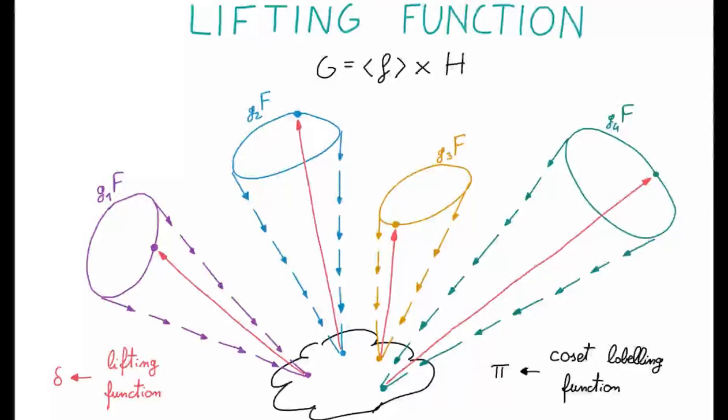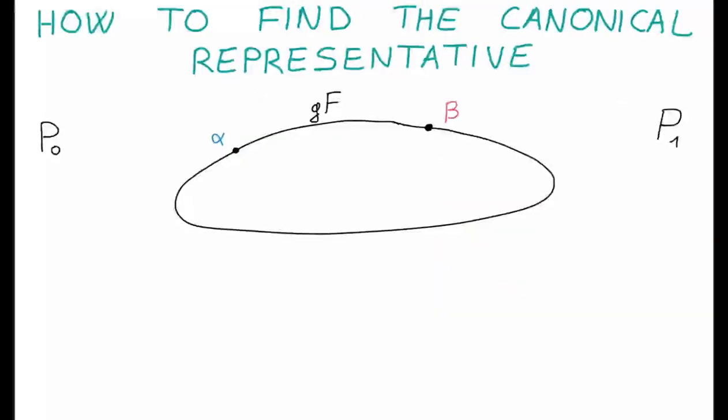The second notion we introduce is called the lifting function. Basically, it does the opposite. It takes an element in the image of the coset labeling function and it maps it back into the corresponding coset. Now, how can we find the representatives?